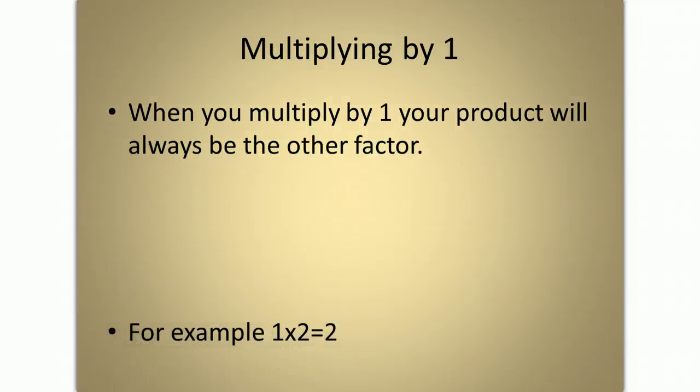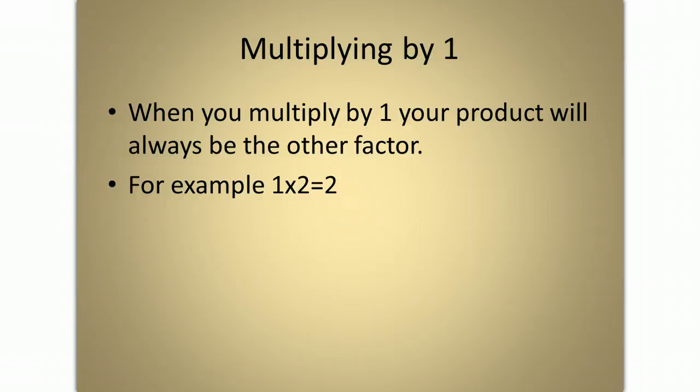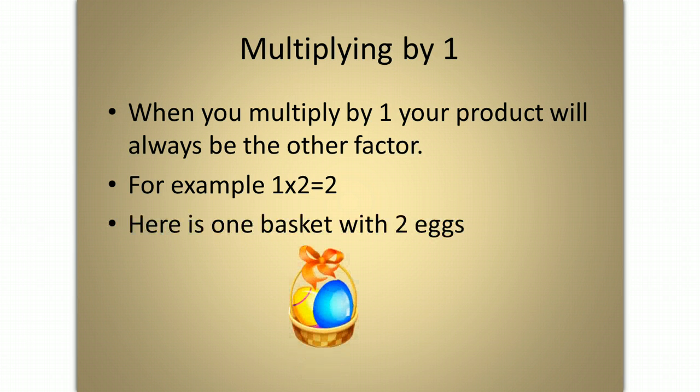Multiplying by 1. When you multiply by 1, your product will always be the other factor. For example, 1 times 2 equals 2. Here is one basket with two eggs. 1 times 2 equals 2.